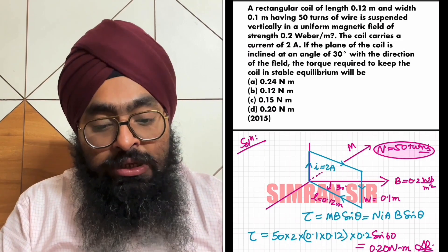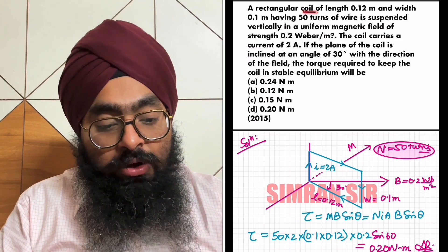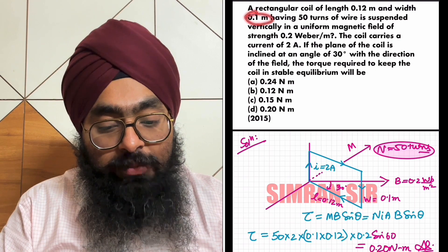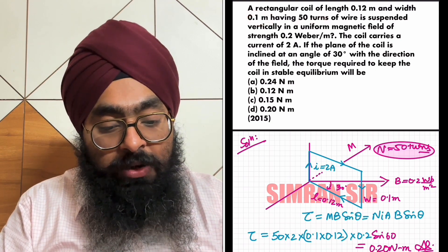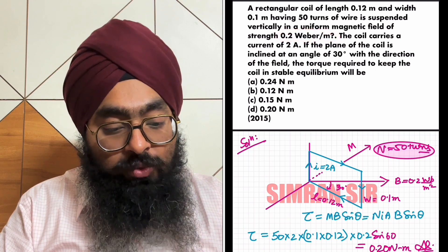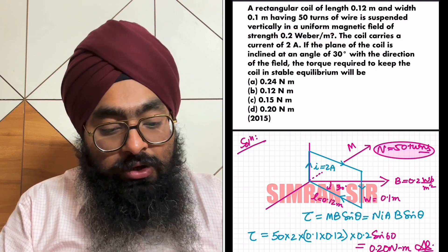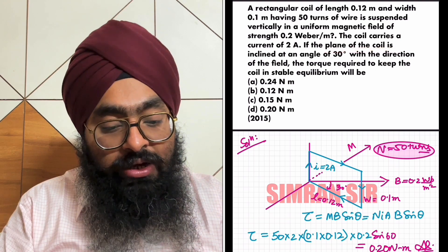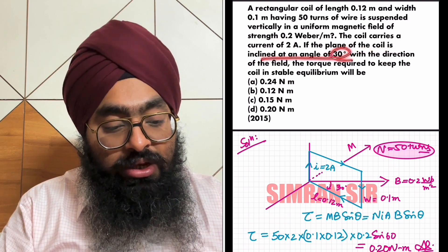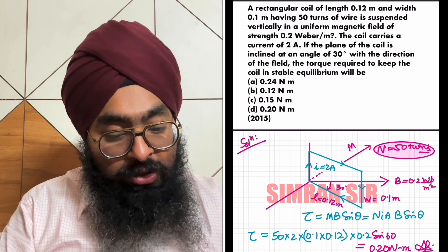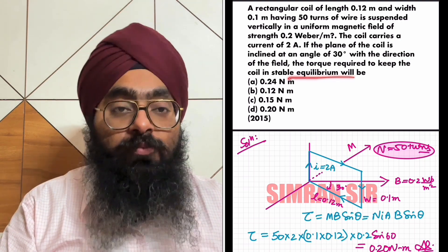A rectangular coil of length 0.2 meter, width 0.1 meter, having 50 turns is suspended vertically in a uniform magnetic field of strength 0.2 weber per meter square. The coil carries a current of 2 ampere. If the plane of the coil is inclined at an angle of 30 degrees with the direction of the field, find the torque required to keep the coil in stable equilibrium.